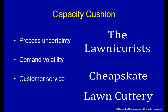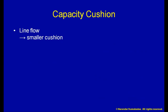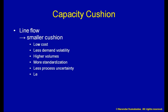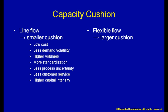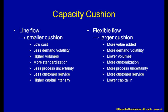As you can see, the more my process has the characteristics of a line flow, the smaller the capacity cushion I need — more low-cost focus, less demand volatility, higher volumes, more standardization, less process uncertainty, less customer service, etc. In addition, high capital intensity also drives the need for greater equipment utilization, or lower capacity cushion. On the other hand, the more my process has the characteristics of a flexible flow, the larger the capacity cushion I need — more value added and higher prices, more demand volatility, lower volumes, more customization, more process uncertainty, higher customer service, lower capital intensity, etc.